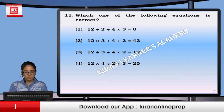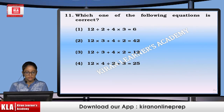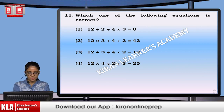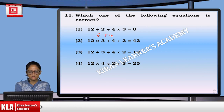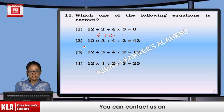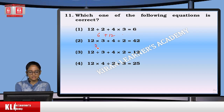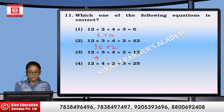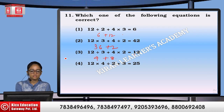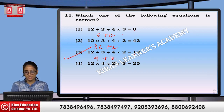Which of the following equations is correct? Applying the BODMAS rule: the first option gives 6 plus 12, which is not equal to 6. Checking the next option: 36 plus 2, 4 plus 8 gives us 12. So the correct option is 3rd.